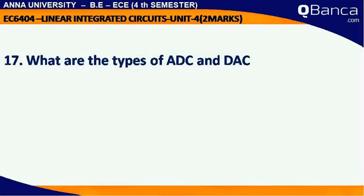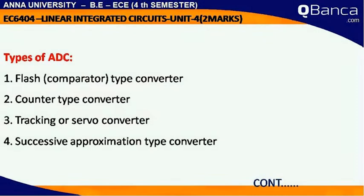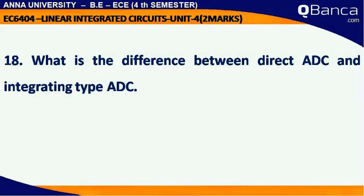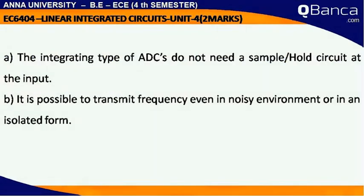What are the types of ADC and DAC? Types of ADC: flash comparator type converter, counter type converter, tracking or servo converter, and successive approximation type converter. Types of DAC: weighted resistor DAC, R2R Ladder, and inverted R2R Ladder. The integrating type of ADC does not need a sample-and-hold circuit at the input, and it is possible to transmit the frequency even in a noisy environment or in an isolated form.